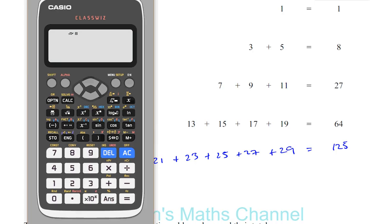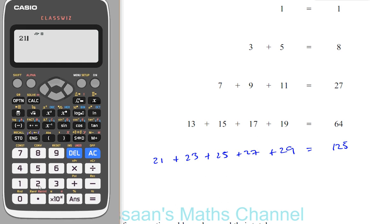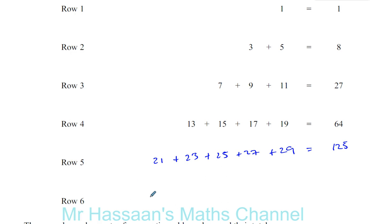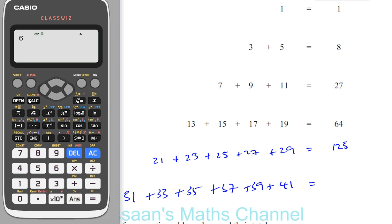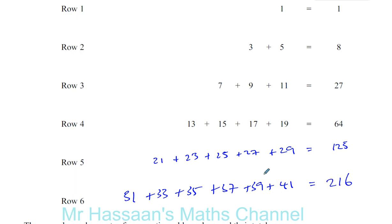Let's verify using the calculator: 21 plus 23 plus 25 plus 27 plus 29 gives us 125 — correct, that's 5 cubed. Then for row 6, starting from 31: 31 plus 33 plus 35 plus 37 plus 39 plus 41. That should be 6 cubed. 6 cubed is 216, and we could confirm by adding these together.